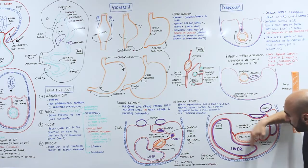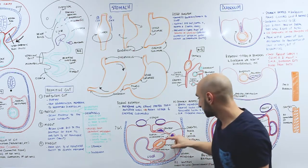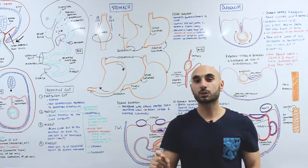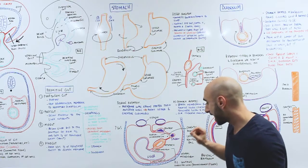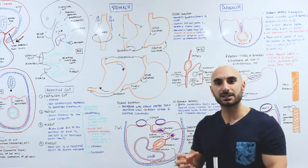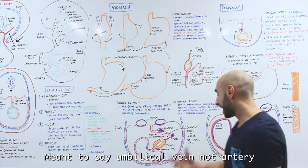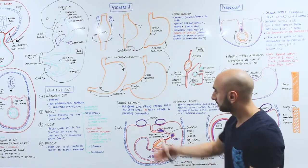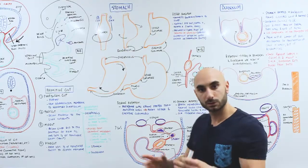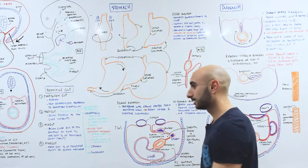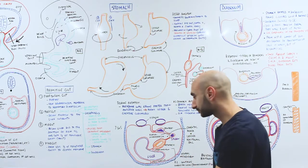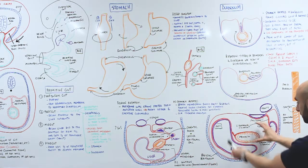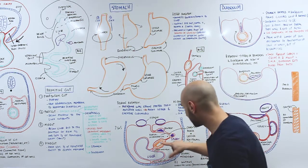So you'll notice the lesser omentum moving to the right. The dorsal mesogastrium is on this side, and the ventral mesogastrium is on the other. What comes from the ventral mesogastrium is the lesser omentum and the falciform ligament. The falciform ligament initially houses the umbilical artery, but at birth it becomes the round ligament. Again, Nicki Minaj is spinning 90 degrees, pulling the dorsal mesogastrium with her, and the stomach rotates clockwise, pulling both mesogastria with it.